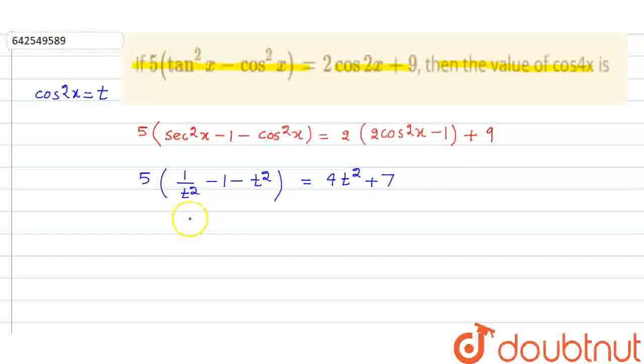I am sorry, this is actually t. So this becomes t, this also becomes t. So this is 5 into 1 minus t minus t square. And cross multiply this thing. So this will be 4t square plus 7t.